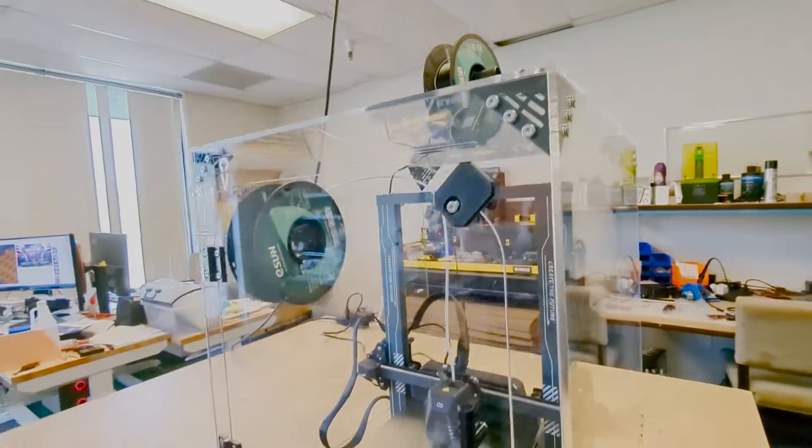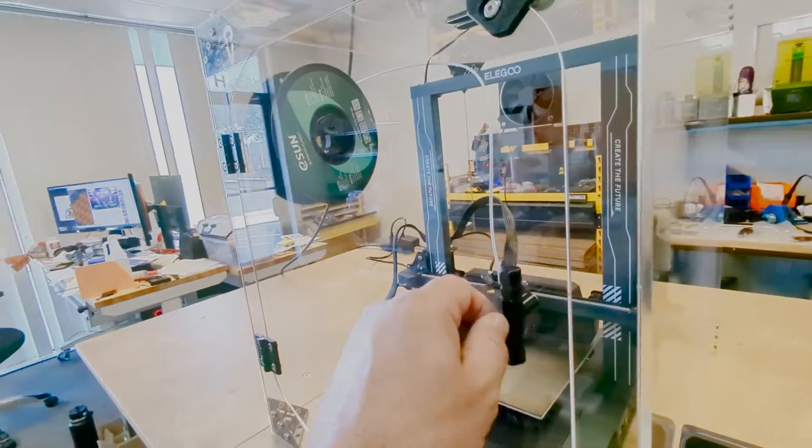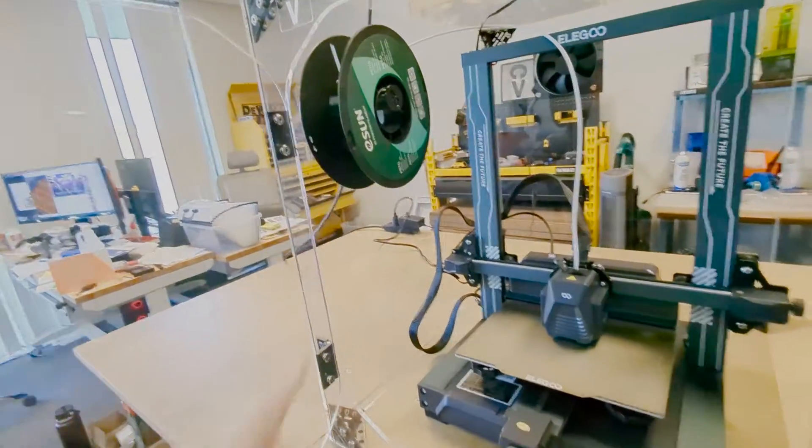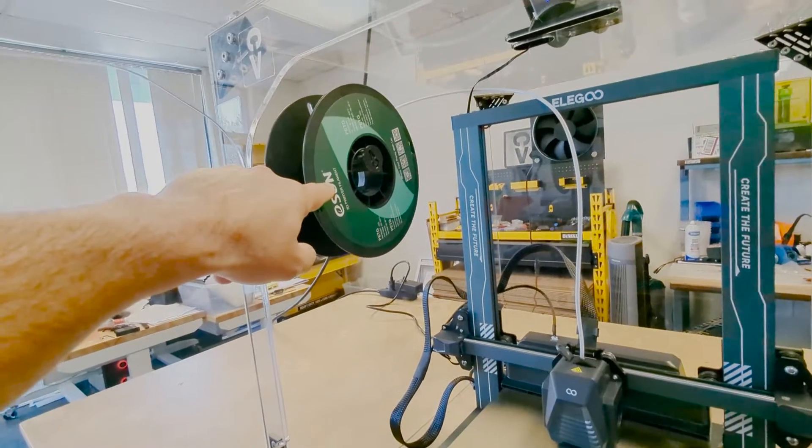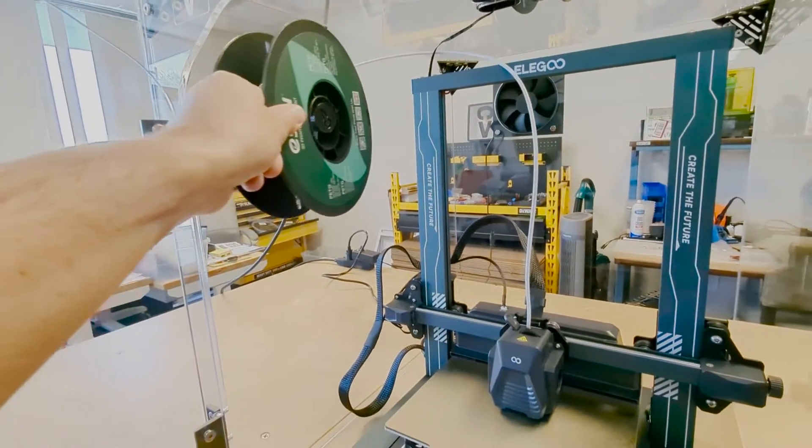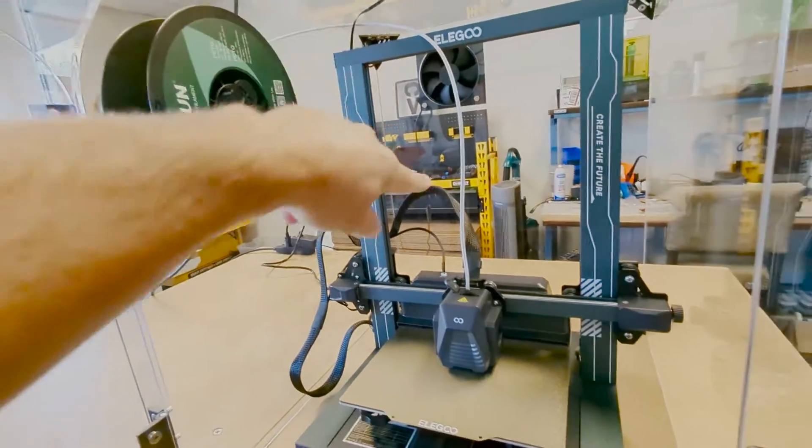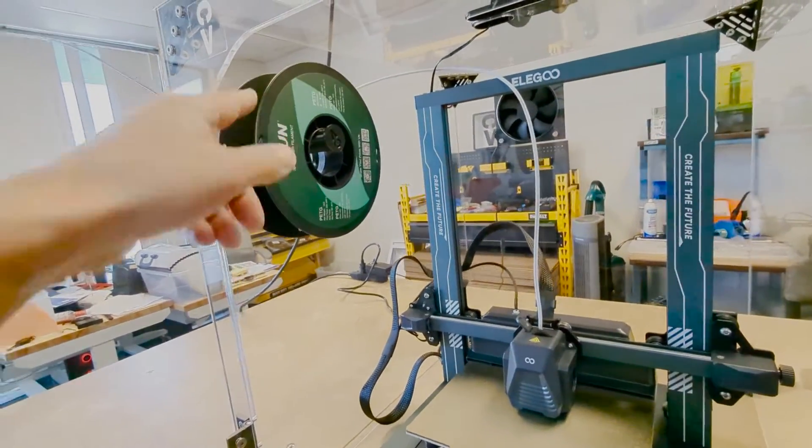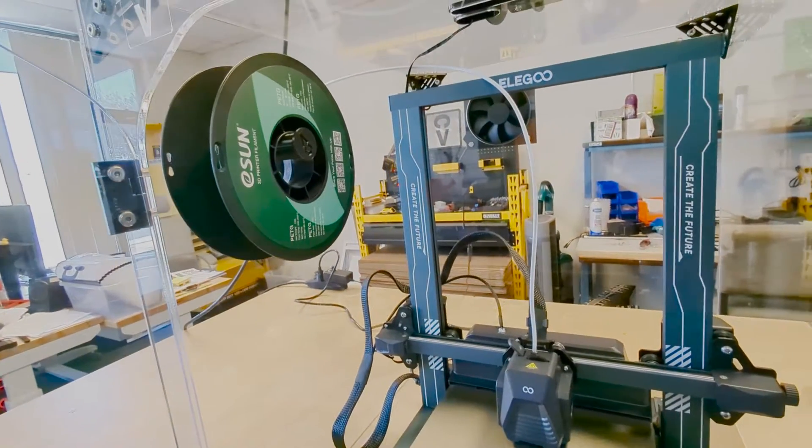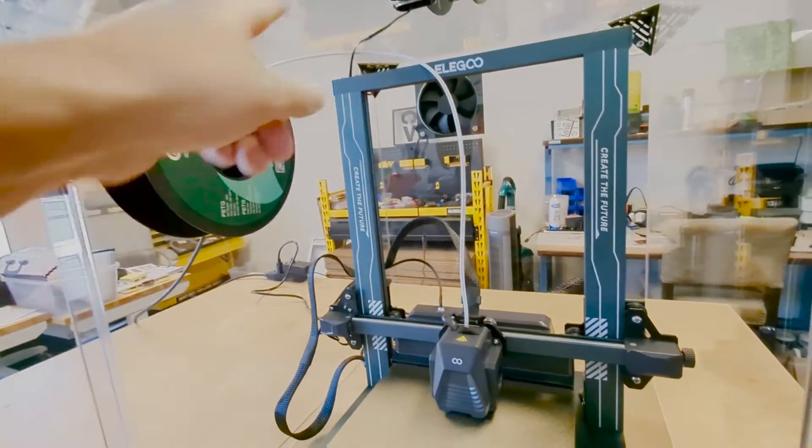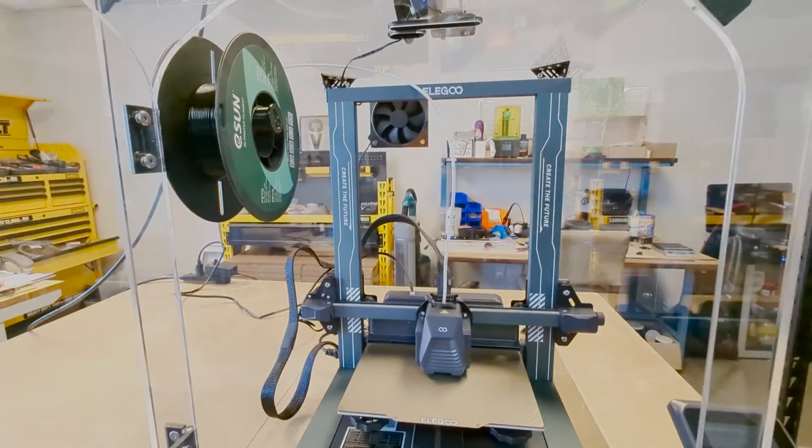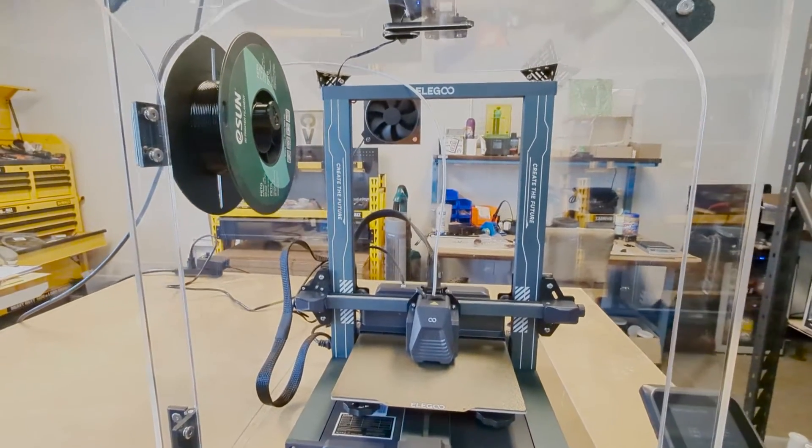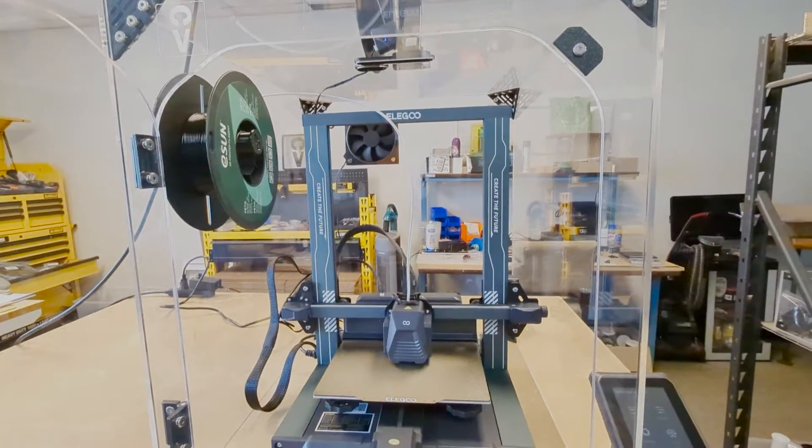This particular one, we've also got the optional internal spool holder that you just mount a spool holder up on top, run some Bowden tube down, and that actually is really handy because that's the one that keeps your filament nice and clean and dust free. And again, that will lead to a better printing experience and less nozzle clogs.